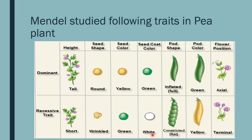Seed coat color: gray/green was dominant, white coat color was recessive. Pod shape: inflated full pod was dominant, constricted or flat was recessive. Pod color: green pod color was dominant, yellow pod color was recessive. Flower position: axial flower was dominant — produced in the axis by axillary bud; terminal flower was recessive — produced on the apex by apical bud. So he studied seven pairs of contrasting characters, 14 varieties overall.